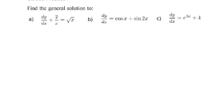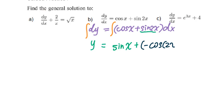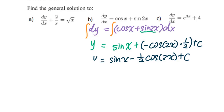For part b, dy equals (cos x plus sin 2x) dx. Multiply by dx both sides, then integrate both sides. The integral of cos x is sin x. The integral of sin 2x is negative cos 2x times 1/2. So y equals sin x minus (1/2)cos 2x plus c. This is the general solution to part b.